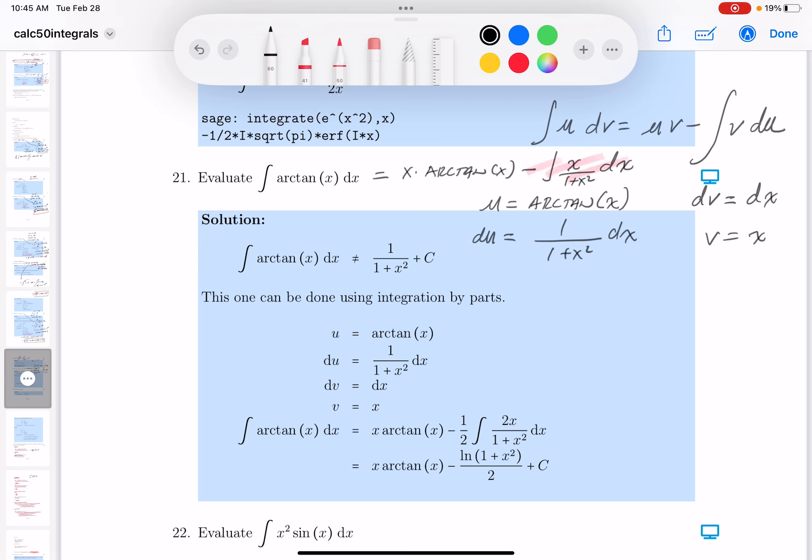And I can do that by u substitution. So let me write this over here now. This could be equal to x arc tangent of x minus, I'm going to use a u substitution.